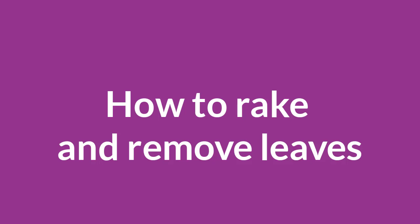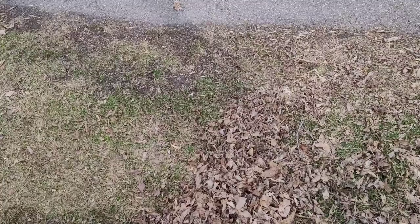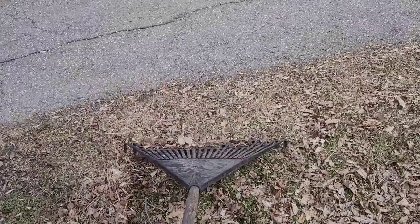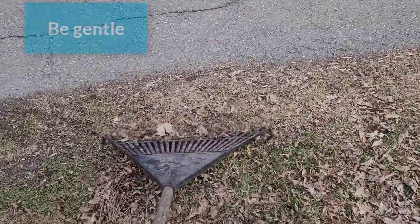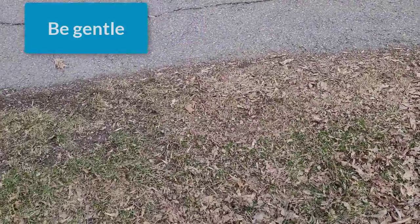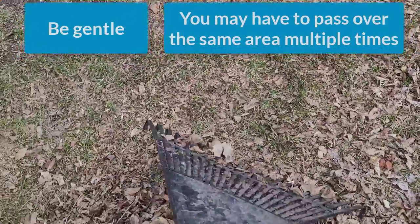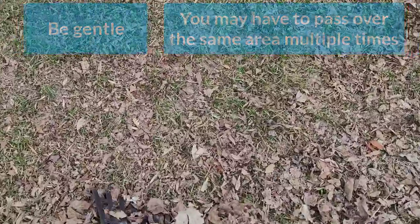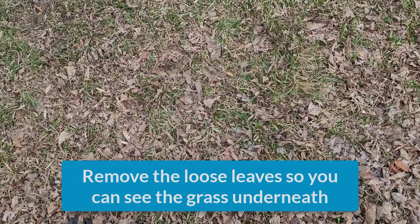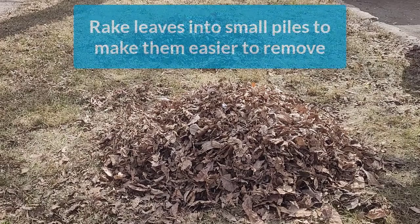So how do you rake and remove leaves? As I said before, you don't need to remove all the leaves from your lawn — they provide really good fertilizer when they break down. You will want to go gently so you don't damage the grass underneath. This will mean that you may have to pass over the same area multiple times. The goal is to remove the bulk of the loose leaves so you can start to see the grass poking out from underneath. Rake the leaves into small, manageable piles — this will make it much easier for you to remove them.